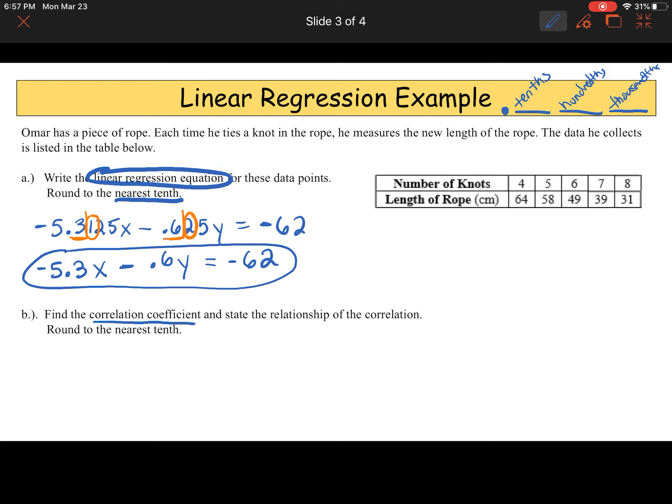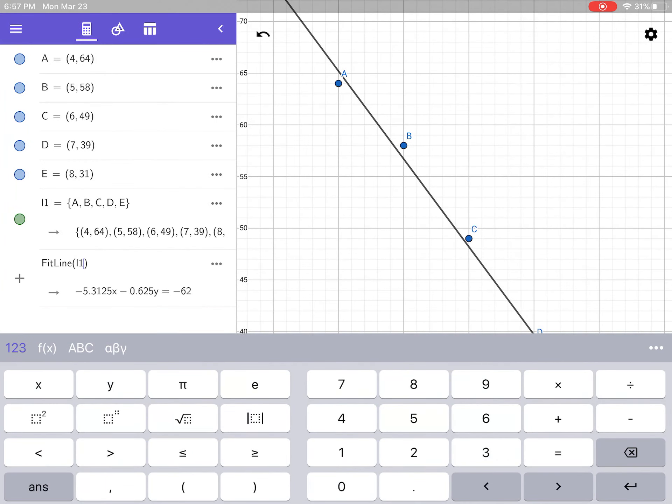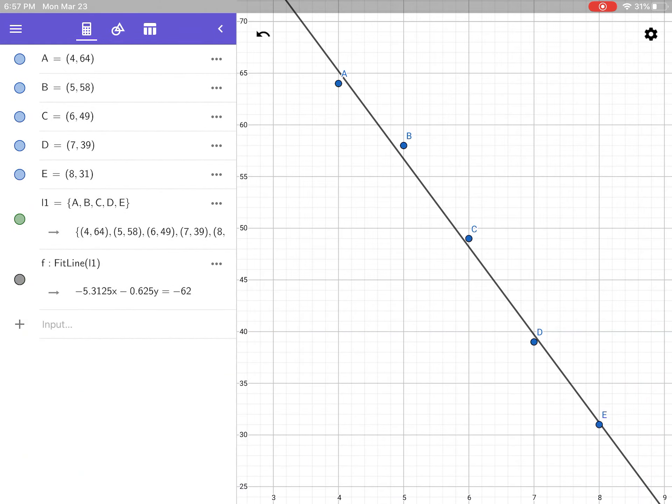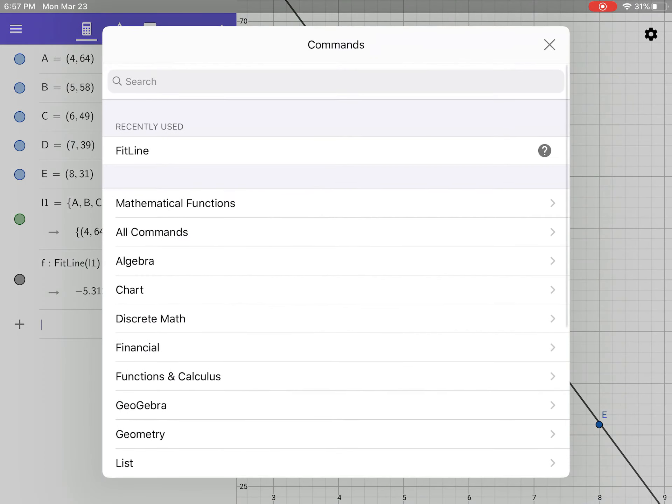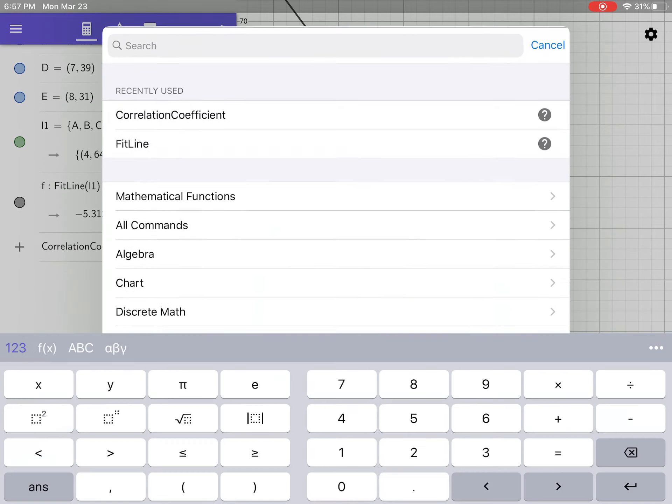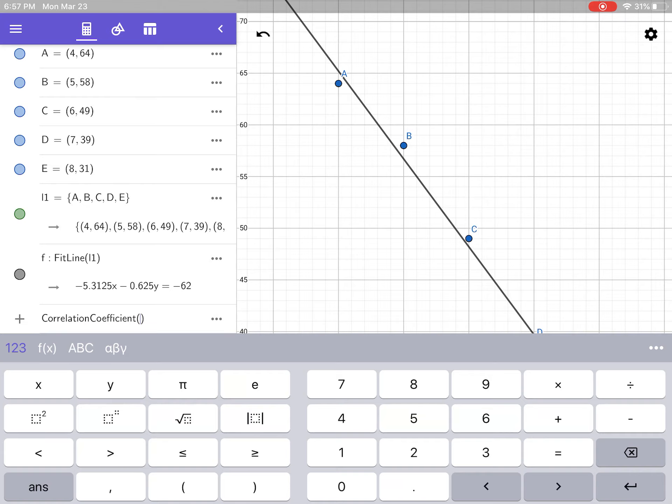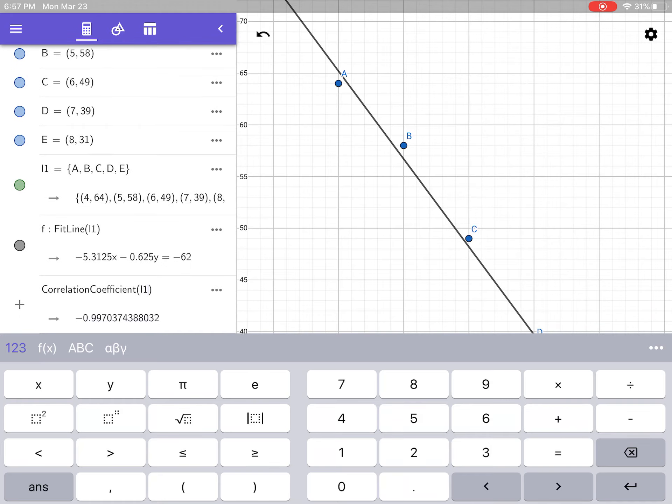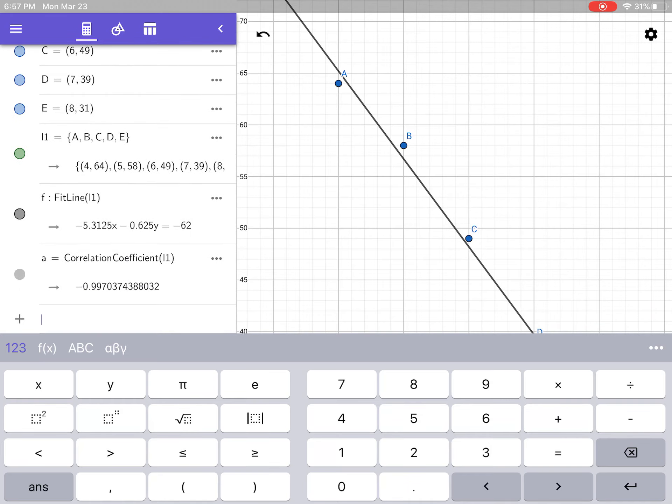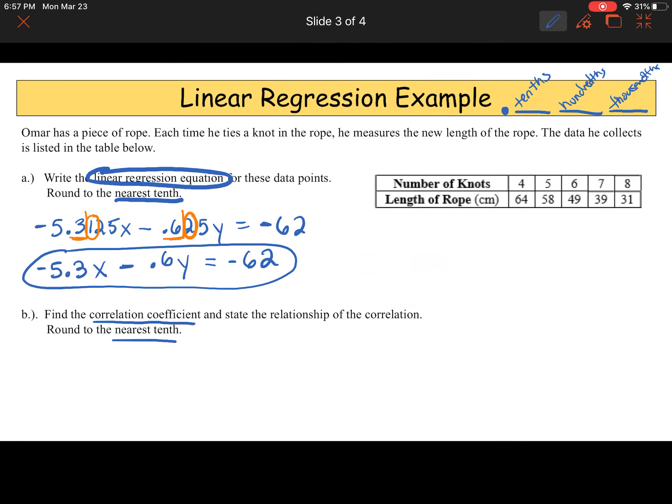Part B, find the correlation coefficient and state the relationship of the correlation. Round to the nearest tenth. Remember, the correlation coefficient just tells us how close together the dots on the line are, or the dots on the graph are. How closely related are these dots? So don't get rid of anything. Don't clear anything until we're all done. I'm going to go down to another line. I'm going to go to dot, dot, dot. And I'm going to start to type in correlation. Oh, there it is, correlation coefficient. I type L1 again because I'm still using my list for L1. Enter. There's my correlation coefficient, 0.9970.